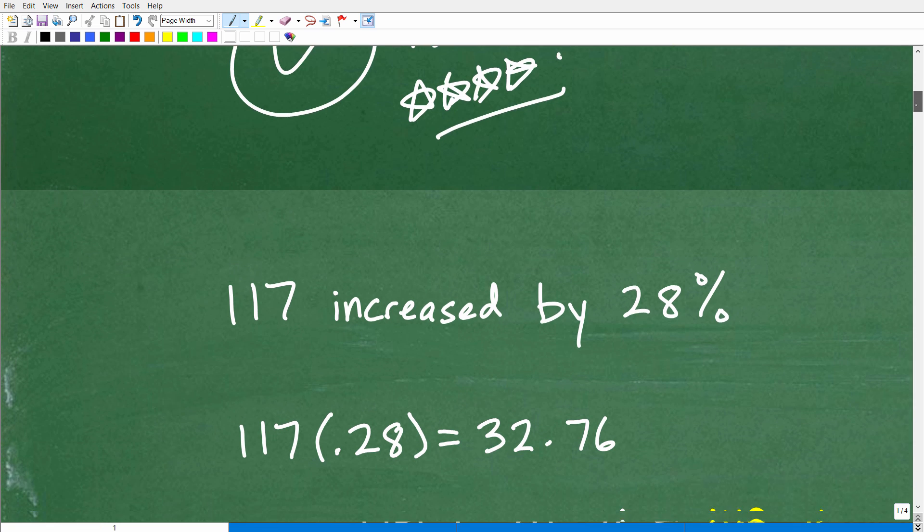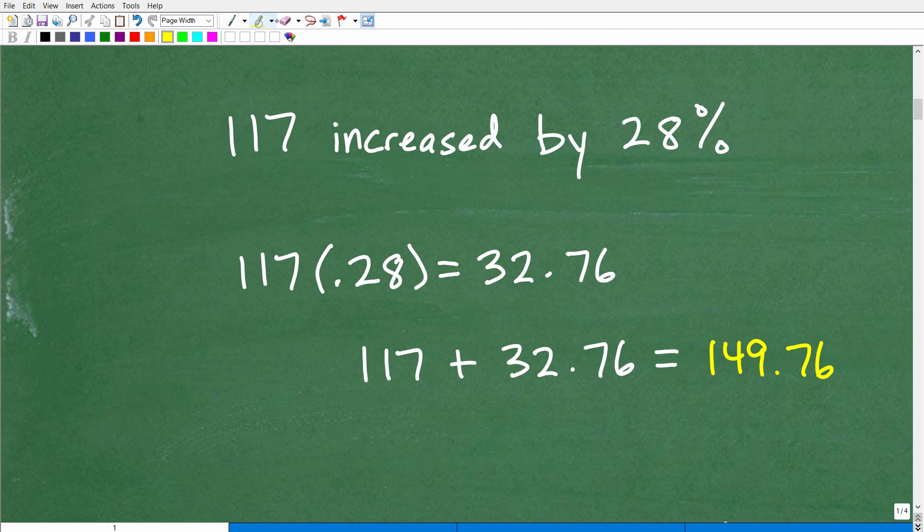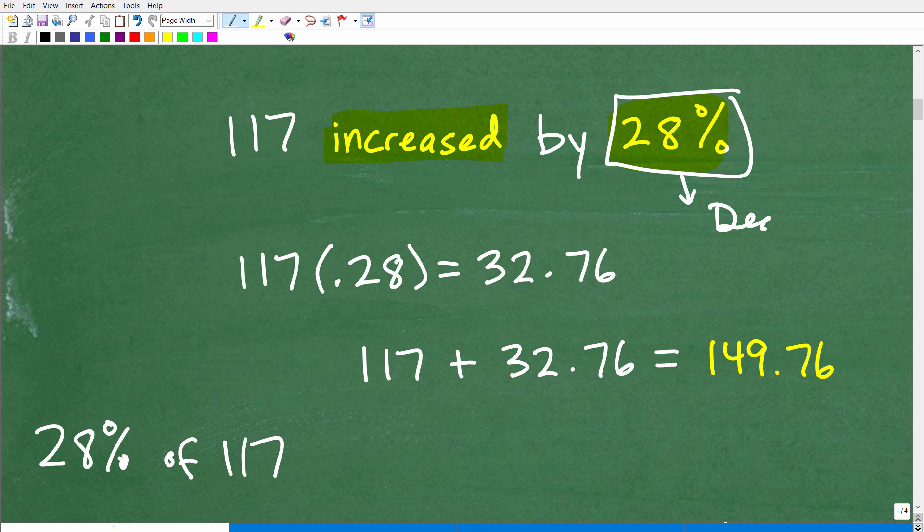Okay, so there's two ways we can think about the solution here. All right, so let's take a look at the problem. We have 117. We're going to increase it by 28%. So the first thing we want to know is what is 28% of 117? So we want to figure out what 28% of 117 is. So how do we do that? Well, when you want to find a percent of a number, what you need to do is convert or change that percent into a decimal.